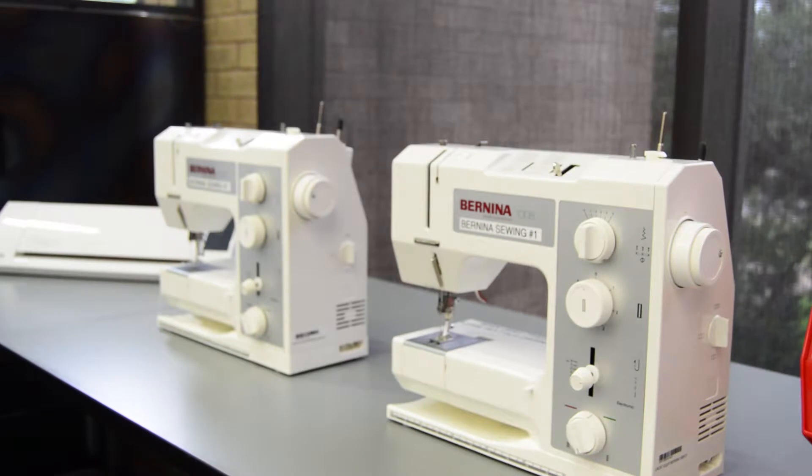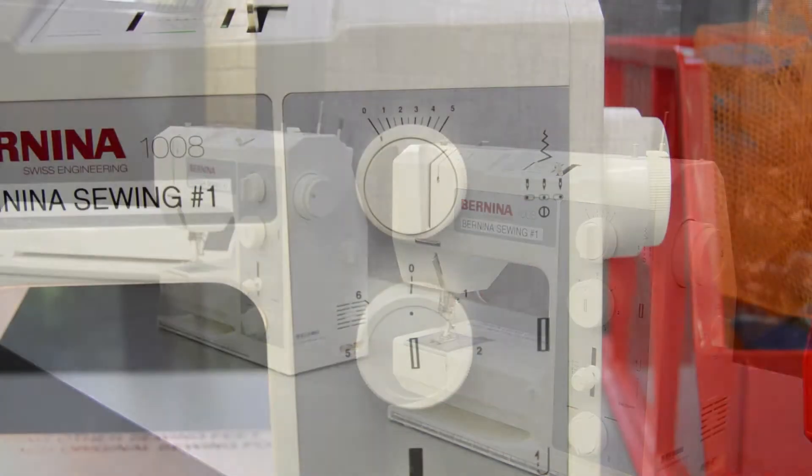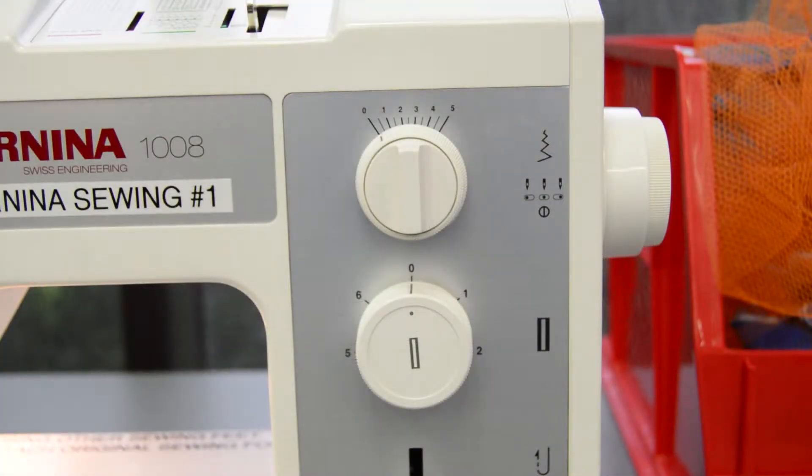On the front of the device we have four main knobs. On the first knob, the stitch width is the outer ring and the needle position is the inner ring.